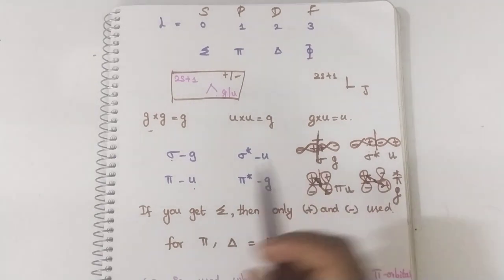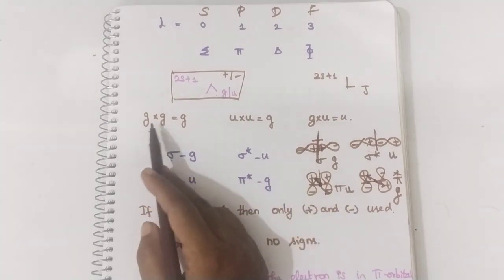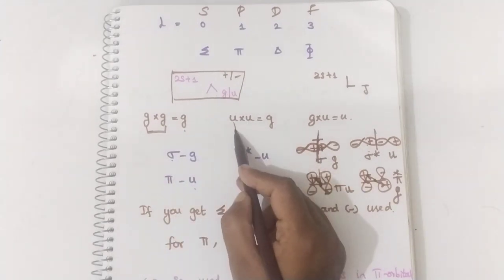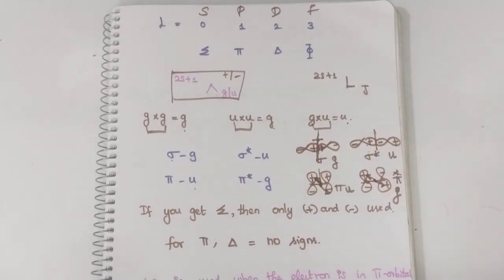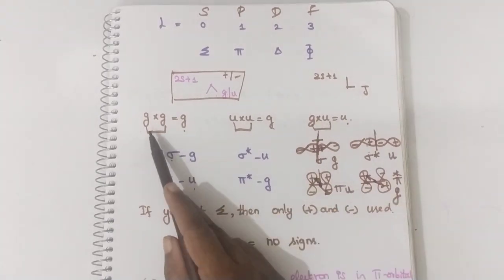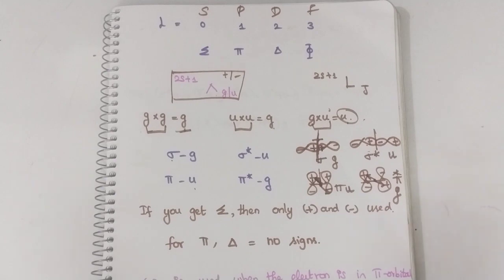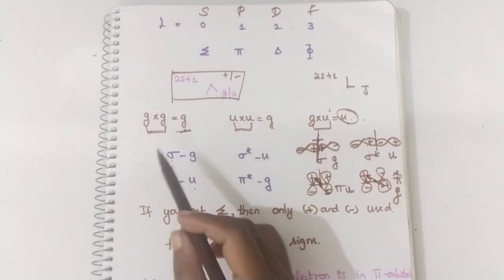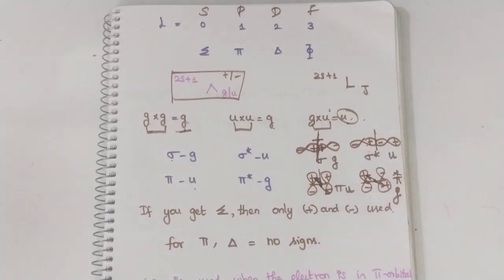These are all very basics. If you have electrons in two orbitals and both are gerade, you multiply those and you get gerade. If it is ungerade and ungerade, you will get gerade. If you have one gerade and one ungerade, you will get ungerade. So: gerade × gerade = gerade, ungerade × ungerade = gerade, gerade × ungerade = ungerade. L values: 0 is sigma, 1 is pi, 2 is delta, 3 is phi.